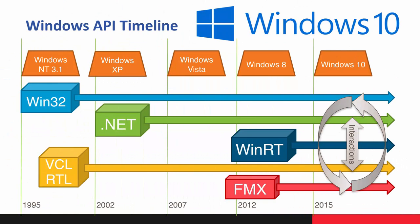That brings us to today with Windows 10. In Windows 10, Microsoft added the ability for interoperability between all of these APIs. Previously there was some interop available, but it was really complicated. In Windows 10, they made it really easy for all these APIs to interop together. What they've done is taken Win32 and brought it back to being a primary API for Windows 10 — a huge step forward. In Windows 8, WinRT was the primary API. In Windows 10, you can develop a native Win32 application and still access those WinRT APIs and get all the platform features.